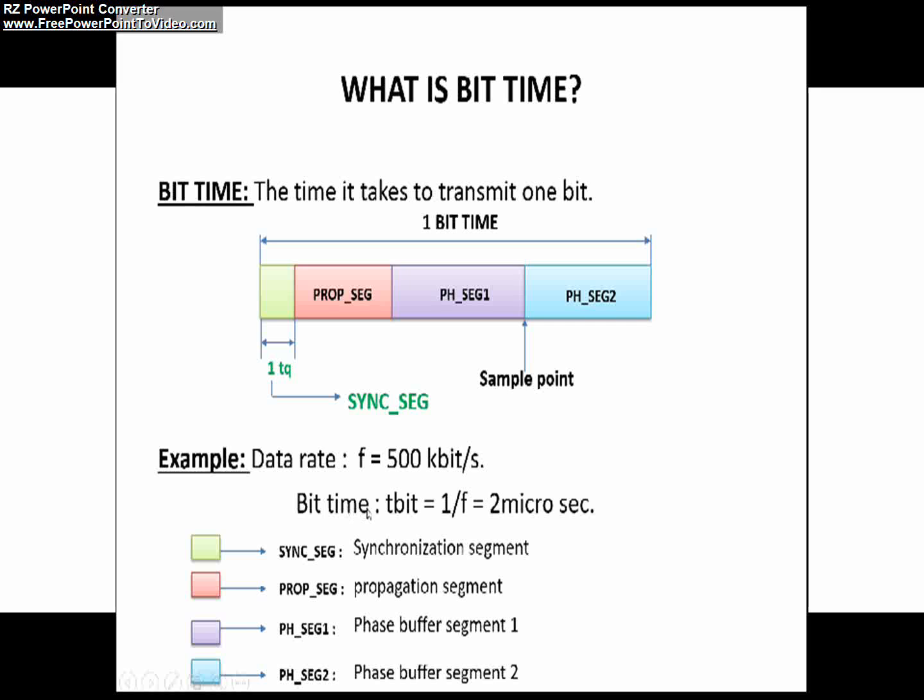If you want to calculate the bit time, as we know, t-bit means the nominal bit time. The formula to calculate t-bit is 1 divided by f. So if you divide 1 by f, where f is the data rate of 500 kbps, you will get 2 microseconds.